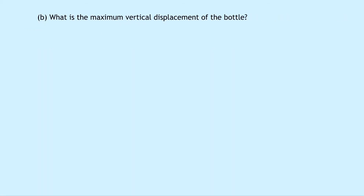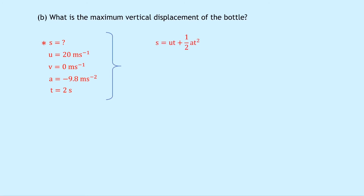Part B asks what is the maximum vertical displacement of the bottle. Writing down SUVAT: S is unknown, U equals 20 metres per second, V equals 0 at its highest point, A equals minus 9.8 metres per second squared, and T equals 2 seconds. Using S equals UT plus half AT squared and substituting in: 20 times 2 plus 0.5 times minus 9.8 times 2 squared, which gives a final answer of 20.4 metres.